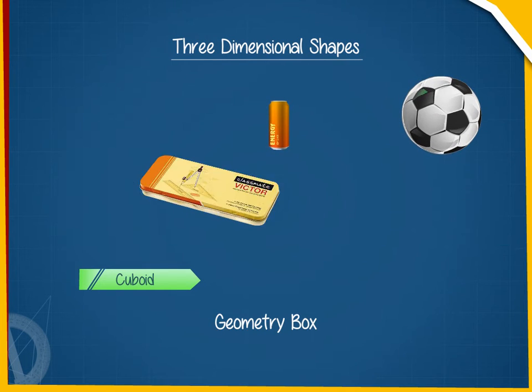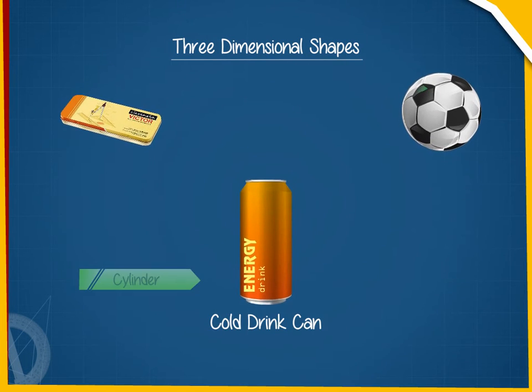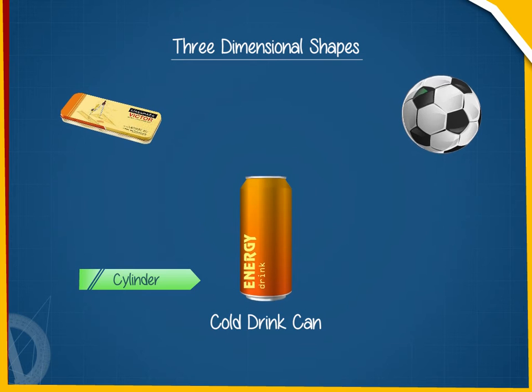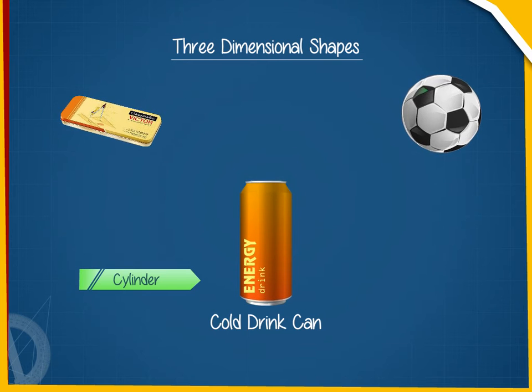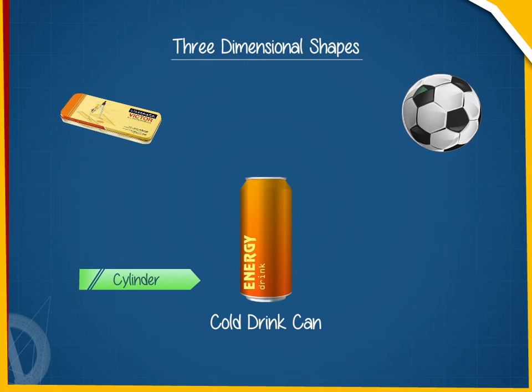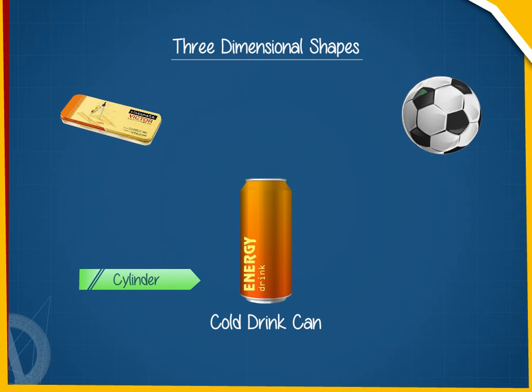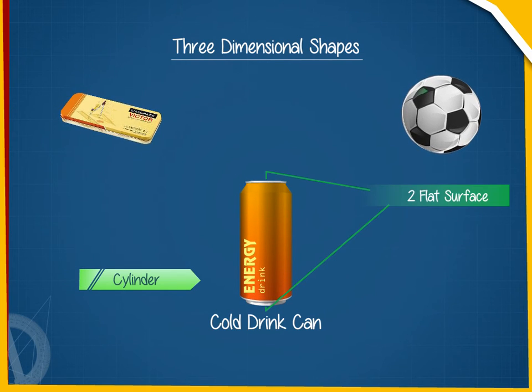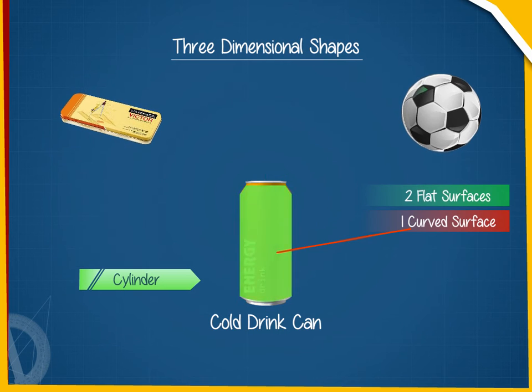Similarly, a cold drink can is a cylinder having three surfaces, out of which two are flat and one is curved.